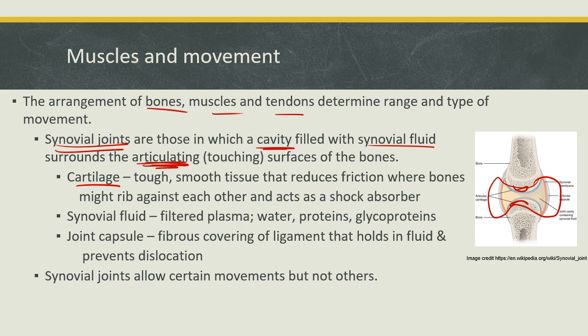Cartilage is tough and smooth tissue that reduces friction where bones might rub against each other. Cartilage also acts as a shock absorber, as does the synovial fluid. The synovial fluid is made up of some plasma, water, proteins, and glycoproteins filling up the space, preventing these bones from rubbing against each other and helping with shock absorption if you're jumping or running.